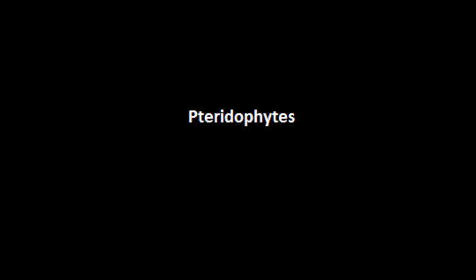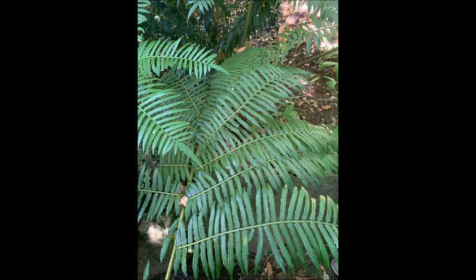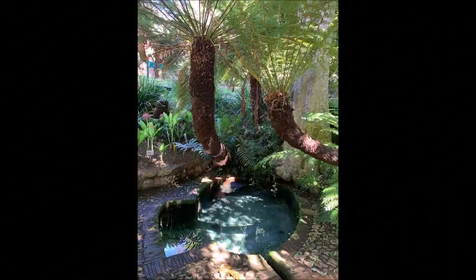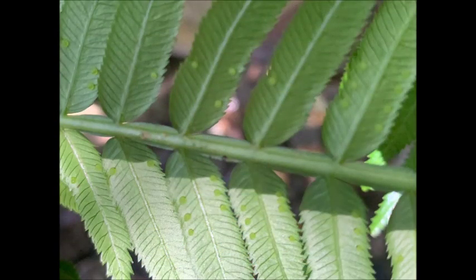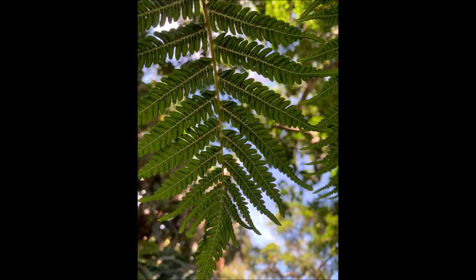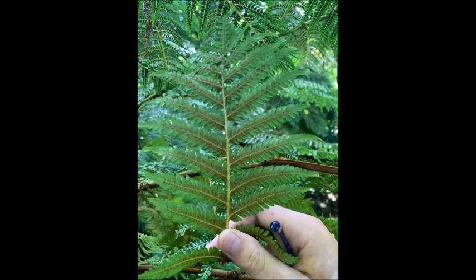Pteridophytes are vascular land plants — for example, ferns. They thrive in cool and shady areas, a moist habitat and acidic soil. Biotic factors include a wide range of insects. Sori are small brown pods that contain the spores of the plant; they are located on the underside of the leaves, where they are protected and can fall directly on the ground. Fertilization requires water so that the male sperm can swim to the female eggs.